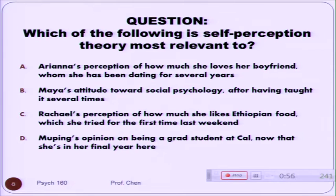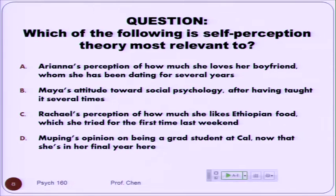5, 4, 3, 2, 1, and the answer is C. Correct, and it should be the highest bar. Yay.